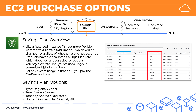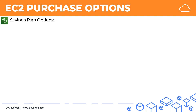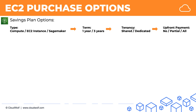Here are the savings plan options. The options are type — you can choose between compute, EC2 instance savings plan, or SageMaker — as well as term, tenancy, and upfront payment. The tricky one is type, since term, tenancy, and upfront payment we've already seen in reserved instances and they work pretty much the same. In terms of type, you get a better discount for EC2 instance type.